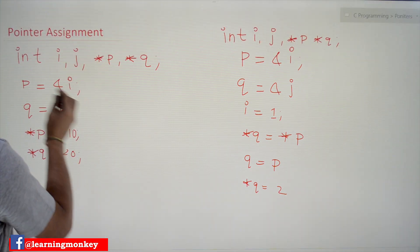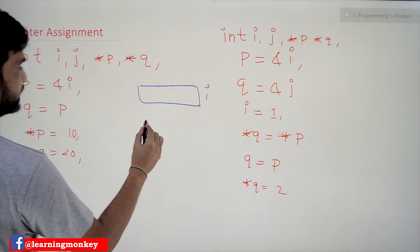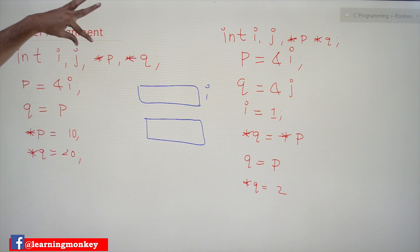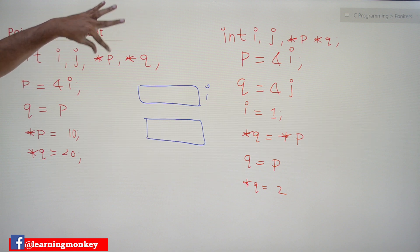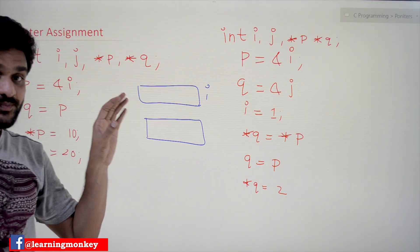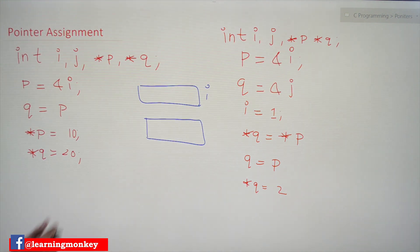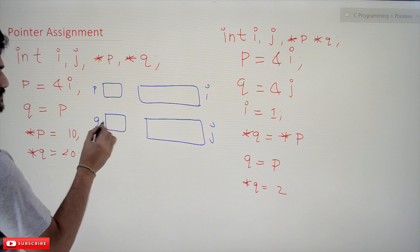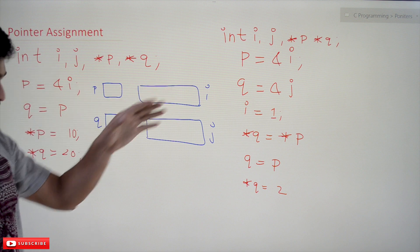We'll execute line by line. Here, a variable i is getting created, and next j is getting created. In a single declaration we can declare pointers also: int i, j, *p, *q — which means p and q are pointer variables storing the address of variables of type integer. So i and j have been created, values not yet assigned, and pointer p and pointer q have been created. This is the visualization we need to have after executing this line of code.